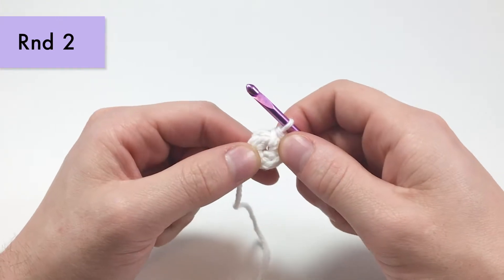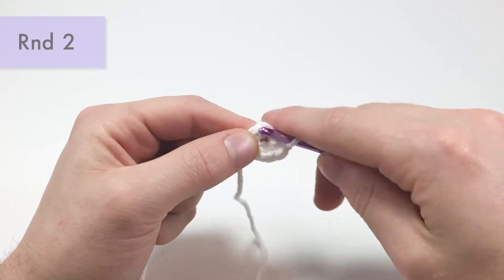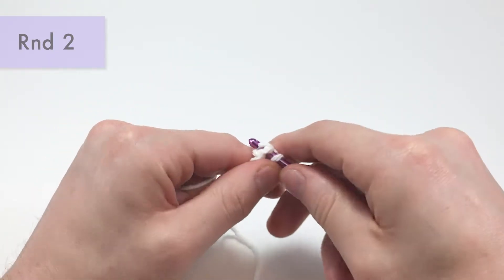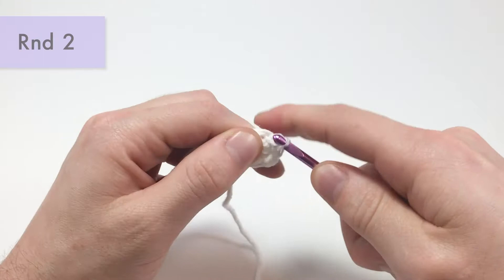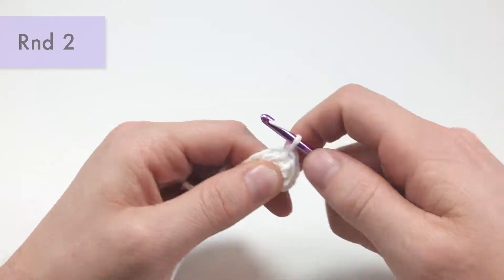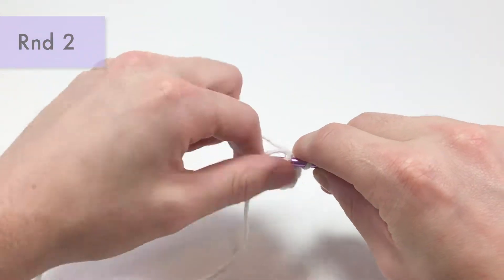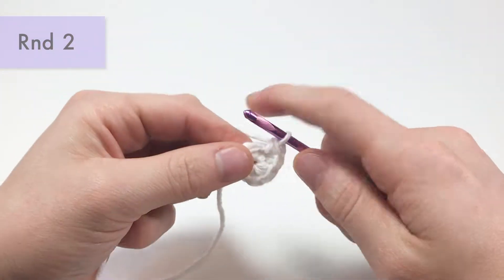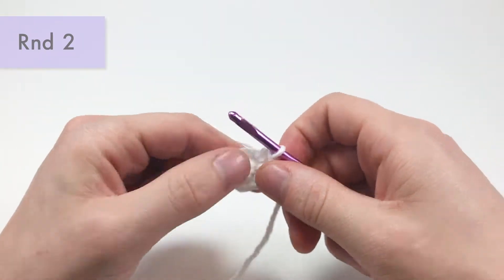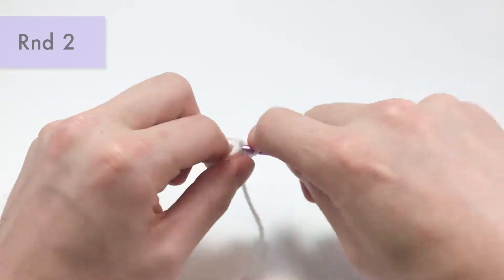For round two, you want to increase into each stitch all the way around. So we want to get into our first single crochet we made right here, and you want to increase, meaning that we single crochet two into each chain around. Now I'm going to be working around this tail, just for the first few stitches to kind of close in that end there. And again, we'll be increasing into each stitch all the way around, and that's going to bring you up from six stitches to 12, because you're putting two single crochets into each stitch.